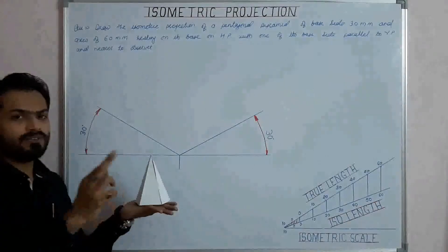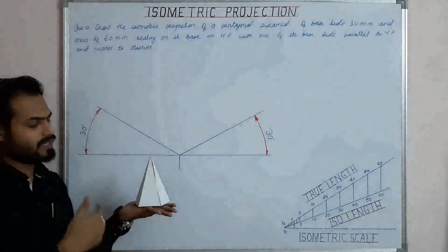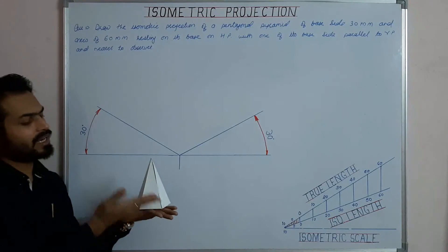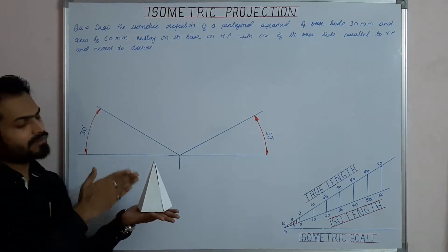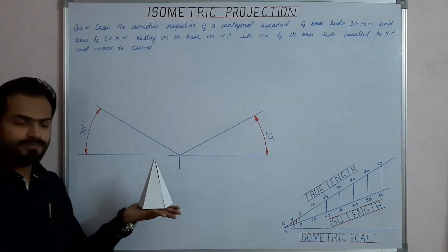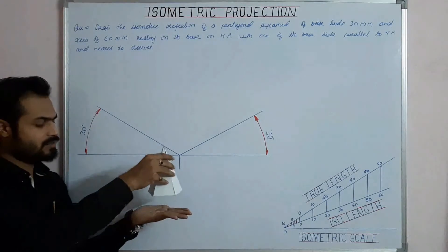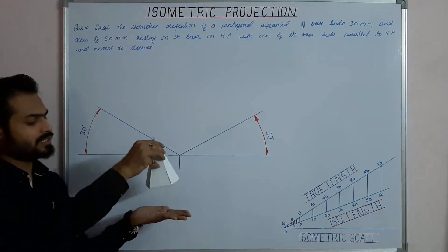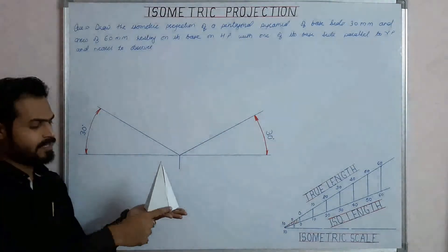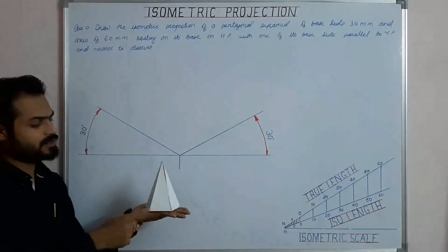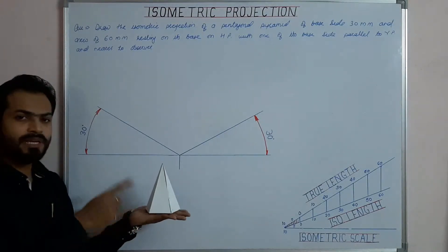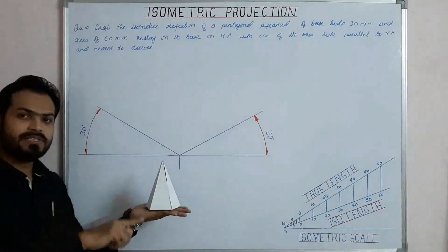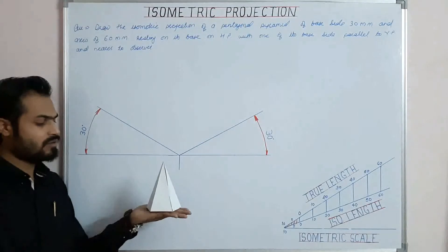In other words, the same side which is parallel to VP is also away from VP. This is the position where the solid is resting on its base on HP, and the edge of its base is parallel to VP, away from VP, and also near to the observer.